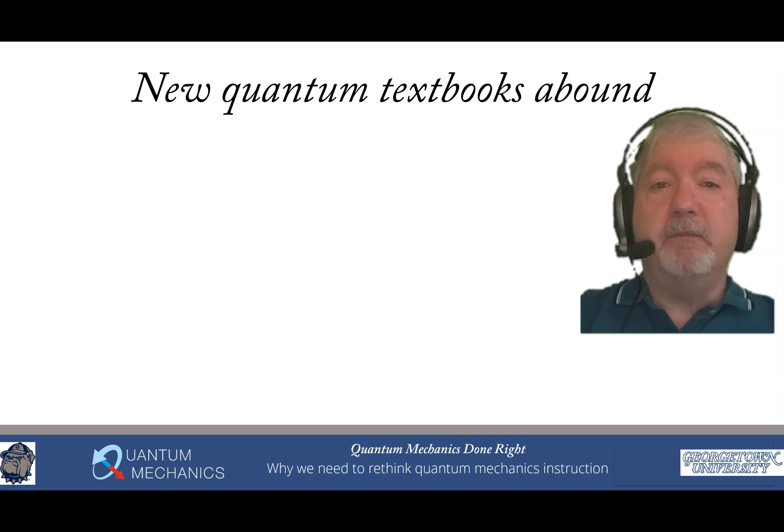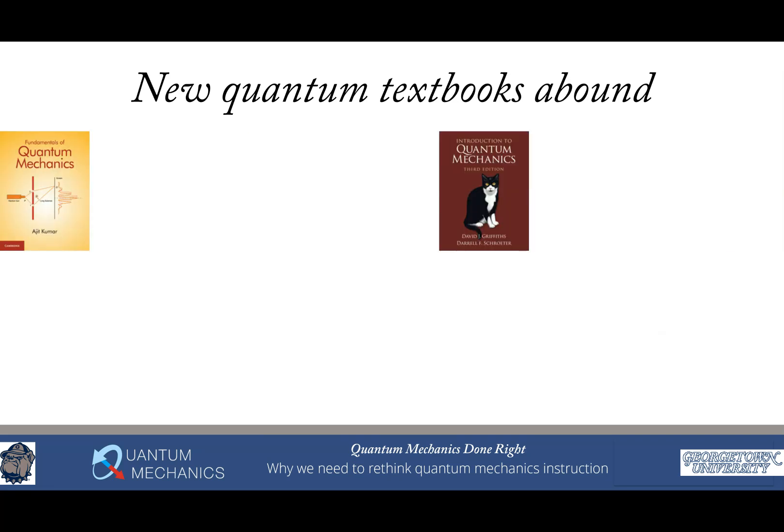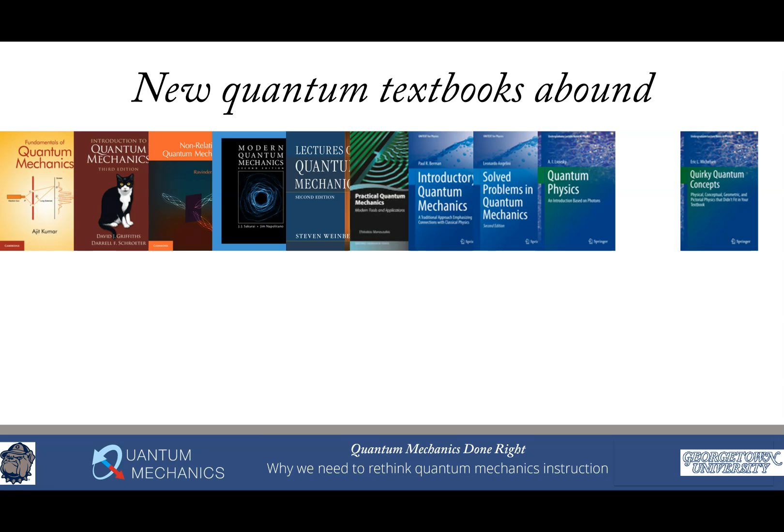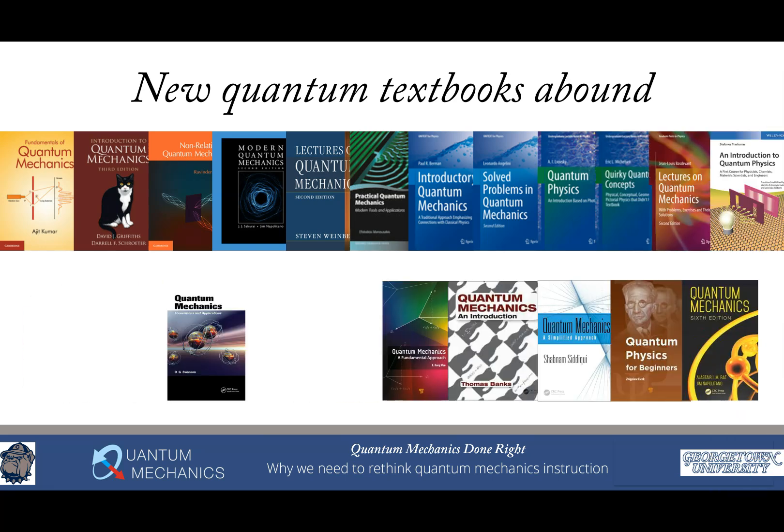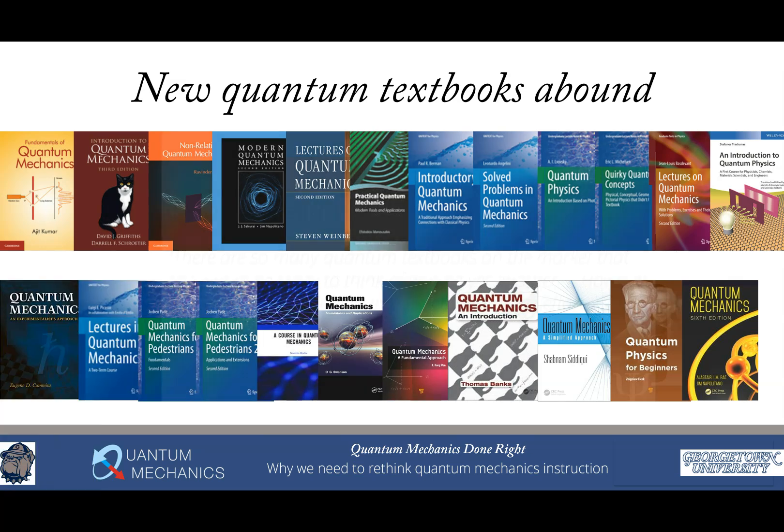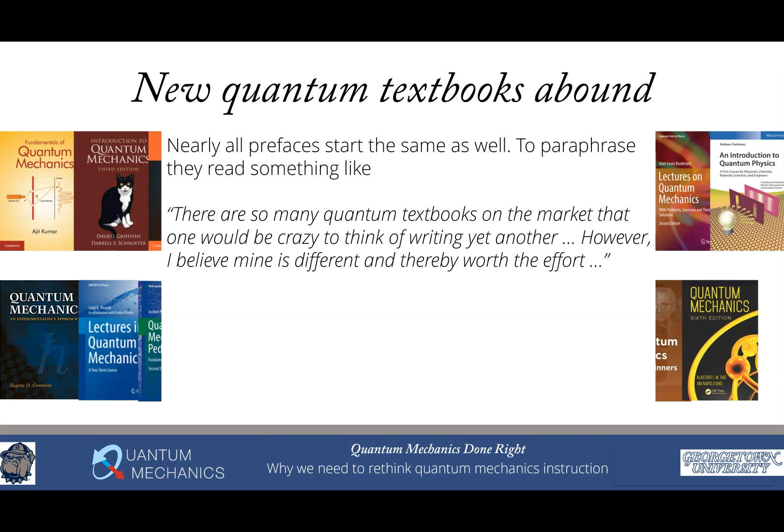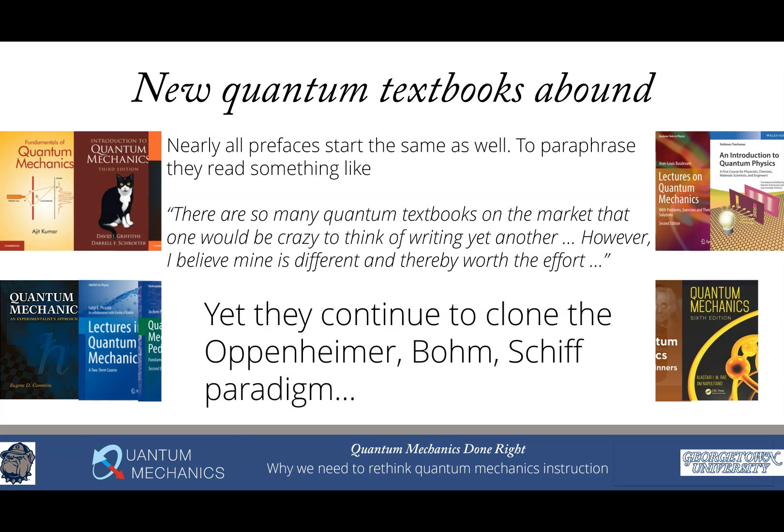It's not because we don't have new quantum textbooks. I went around and I looked at all the quantum textbooks that were released around 2021. And here's what I found. This isn't even all of them. This is just a selection of the quantum books that were available. It's almost never ending. And yet, when you look at them, nearly all of the prefaces start out the same. To paraphrase them, they read something like, there's so many quantum textbooks on the market that one would be crazy to think of writing yet another. However, I believe mine is different and thereby worth the effort. Then when you look at it, they're essentially a clone of this Oppenheimer, Bohm and Schiff paradigm.